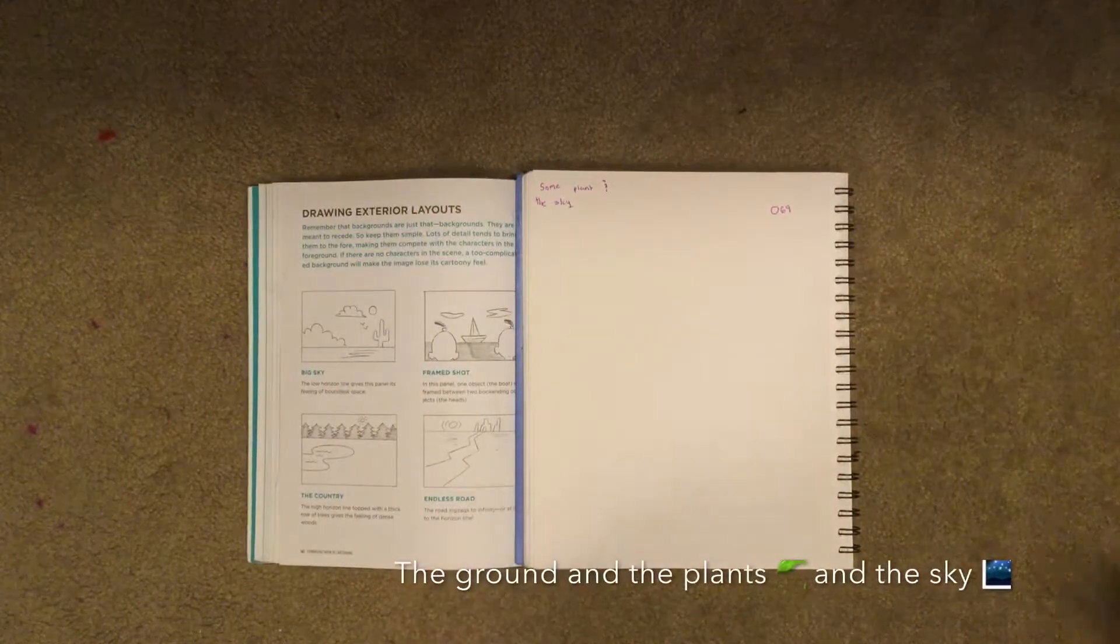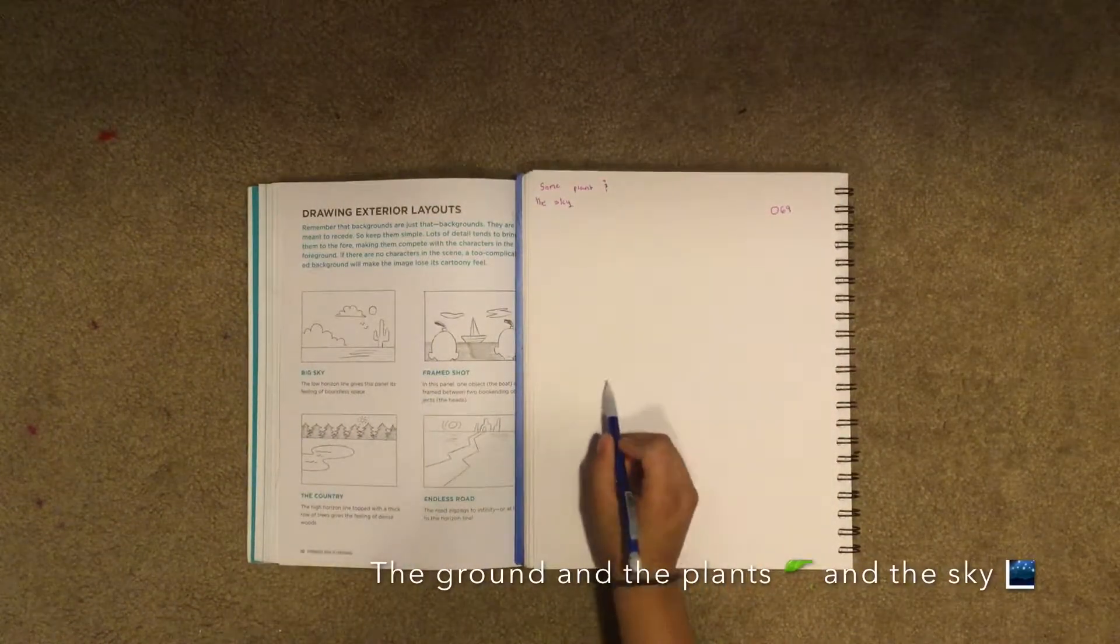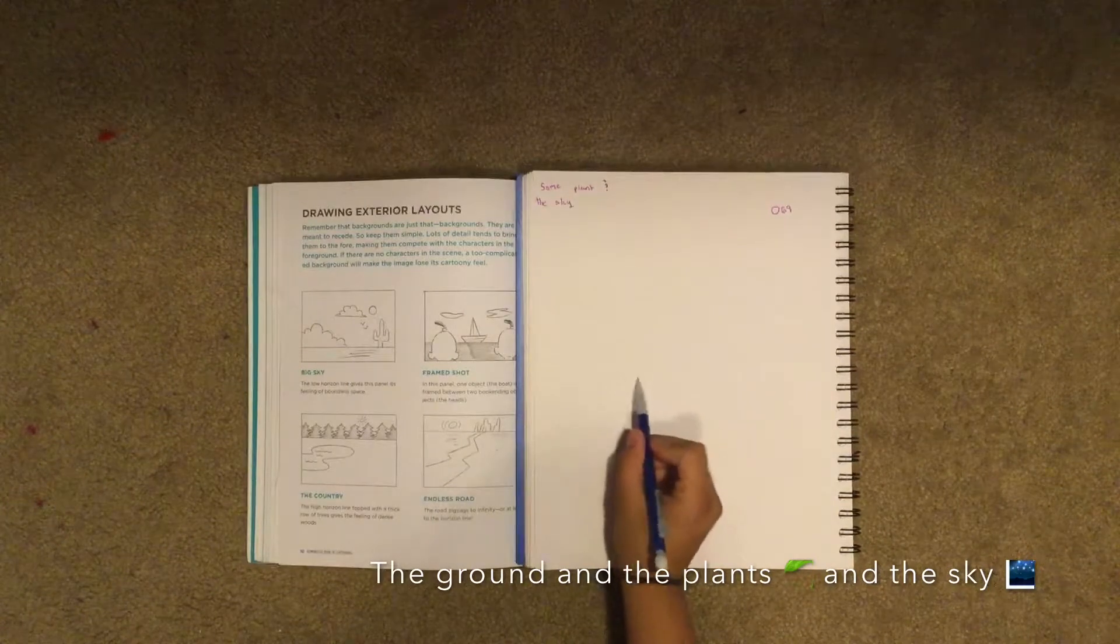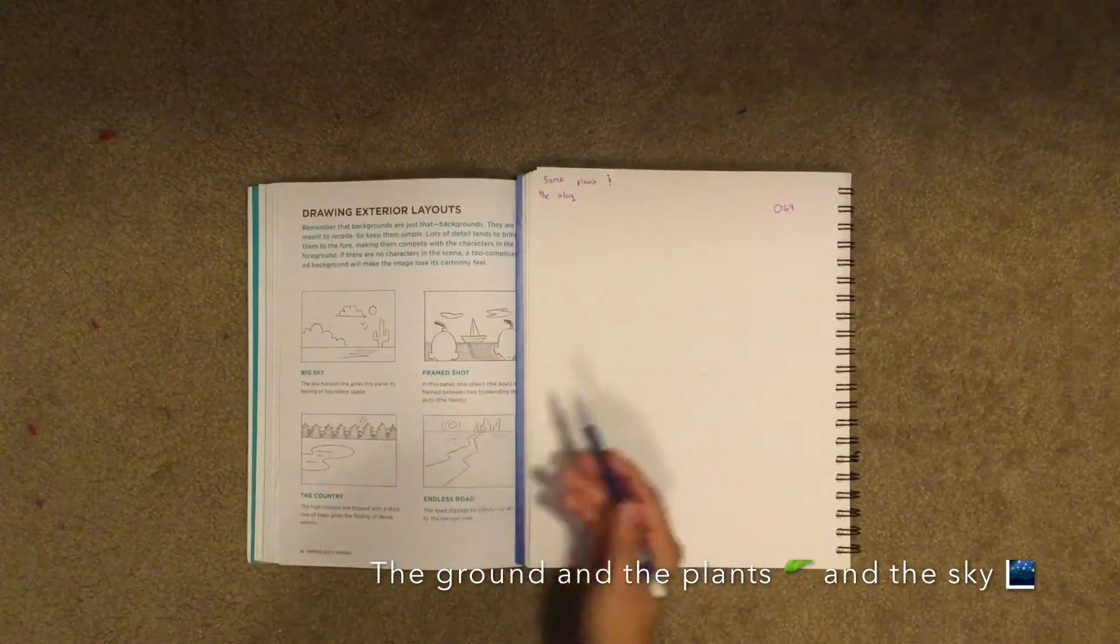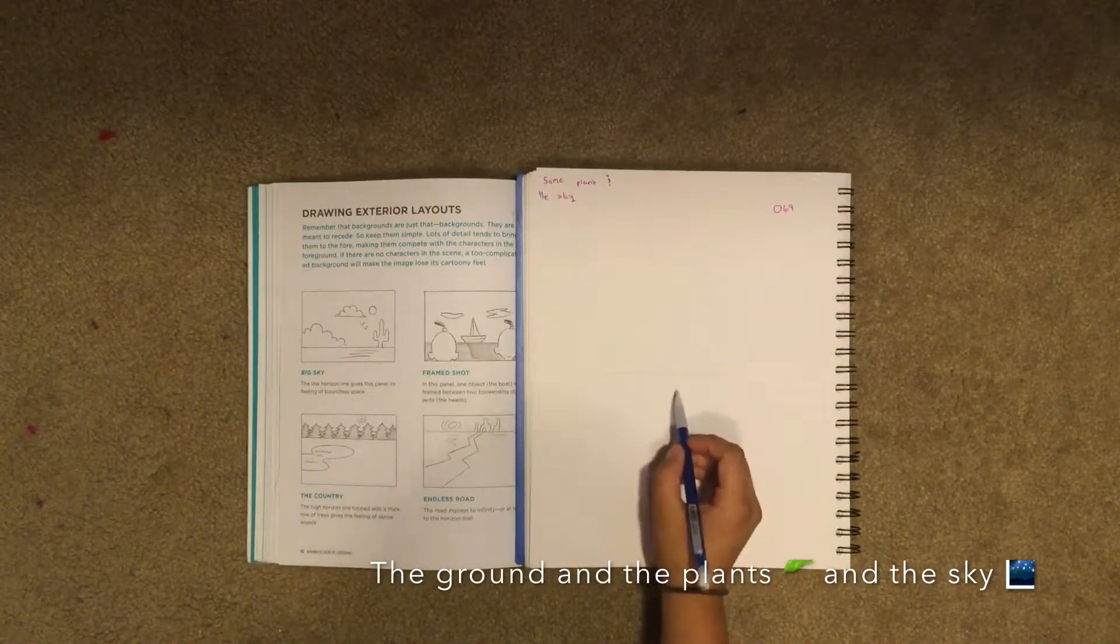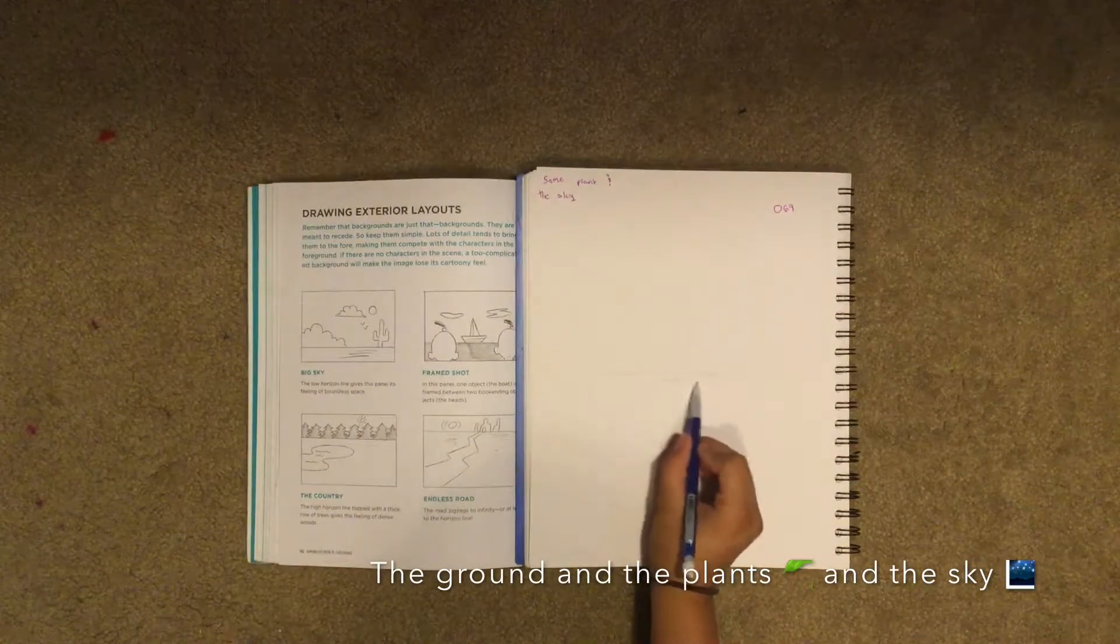For the landscape, we have to draw the land. So it's just like a straight line. And we don't finish the entire line because we have to box after. Then we draw some lines down here.